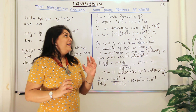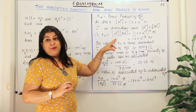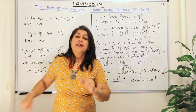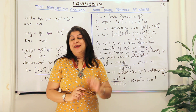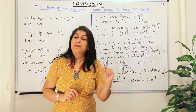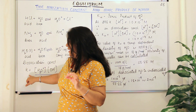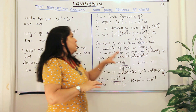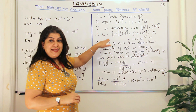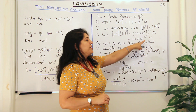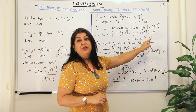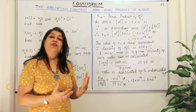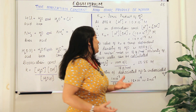We say 'under standard conditions' because the ionic product — like any equilibrium constant — is temperature dependent. The value of K would be different at different temperatures for the same reaction. So at 298 K, Kw = 1×10⁻¹⁴, but at another temperature it would be a different value.